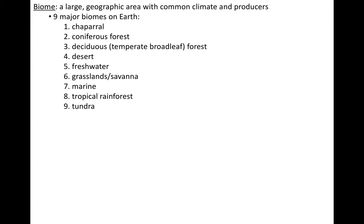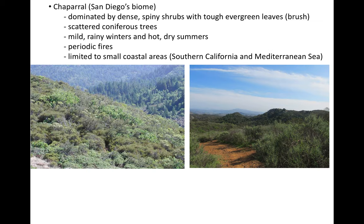Our last section is biomes. There are nine major biomes. A biome is a large area on a planet that has certain types of plants or vegetation. San Diego's biome is the chaparral. Chaparral biomes are generally found in areas around 30 degrees north latitude, which is close to where San Diego is located. You may hear the term Mediterranean — that's the type of climate you have in a chaparral biome.